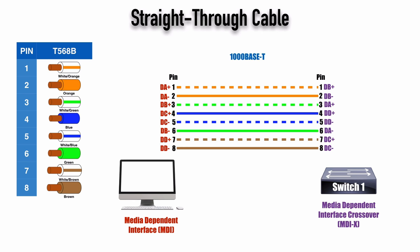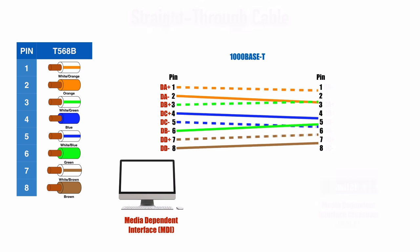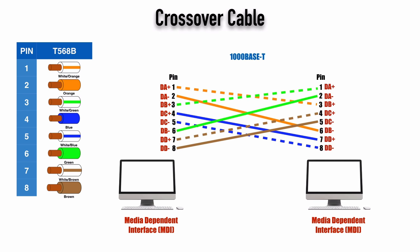Everything works with the straight-through cable when one side is MDI and the other is MDIX. However, if we hook a couple of PCs back-to-back and want to communicate at gigabit speeds, we need a crossover cable. If both devices are MDI, the pinouts are the same on both sides, so we have to cross some wires over. The DAs need to map to the DBs, the DCs need to map to the DDs, and so on. For example, pin 1 on one MDI device — DA+ — maps to DB+, pin 3 on the other side.